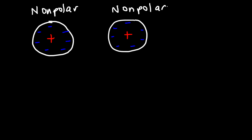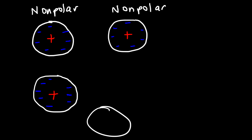Because the electrons are constantly moving, there are going to be times where one side of the atom will have more electrons than the other side. In this case, the electron cloud is now distorted. So we have an excess of negative charge on the left and a deficiency of negative charge on the right side, meaning the right side is more positively charged now.